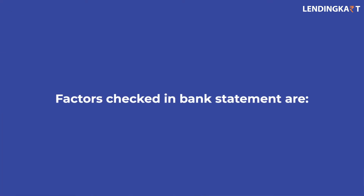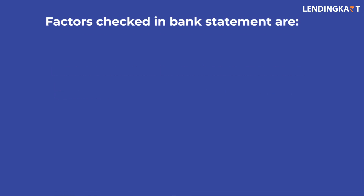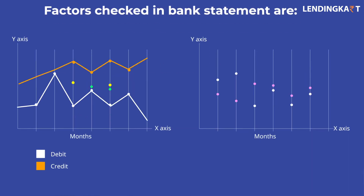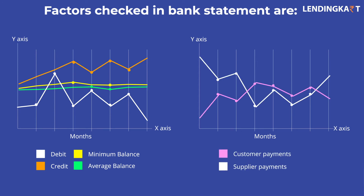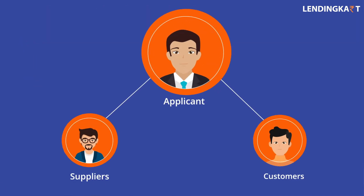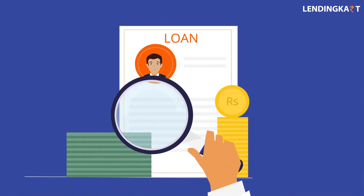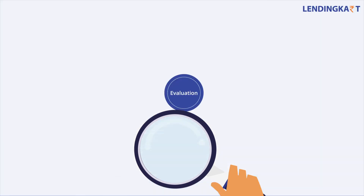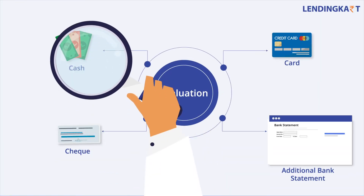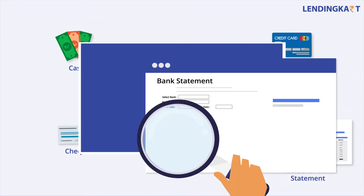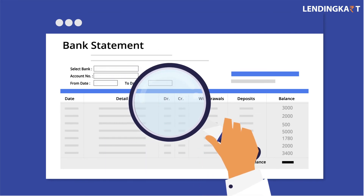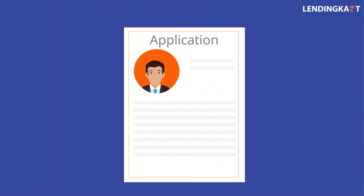Factors checked in the bank statement include: trend of debits and credits, minimum balance, average balance, trend of customer and supplier payments, background of suppliers and customers, usage of earlier disbursed loans, EMI repayment, and major mode of payments. Additional bank statements are also evaluated.